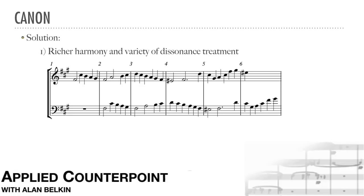Notice here how, in measure two, the two dissonant passing tones take the top part smoothly up to D, which in turn creates a new harmony over the low voices: F-sharp. In measure three, the accented passing tone B keeps the line conjunct while it goes down to the low E-sharp, which is harmonized as an appoggiatura. The high G-sharp over D in measure five implies the seventh chord, leading to the dominant in the next bar.